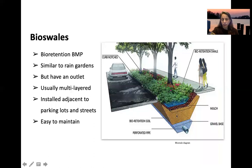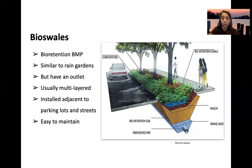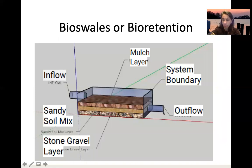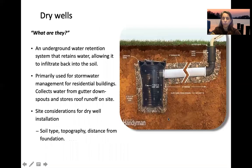Bioswales are similar to rain gardens but have an outlet — a perforated pipe at the bottom of the gravel base with holes on top and solid on the bottom — so water comes in, gets treated, and exits through the pipe. These are often adjacent to parking lots because of the large runoff volume. Benefits include nutrient reduction, stormwater management, and water retention, with maintenance varying by location.